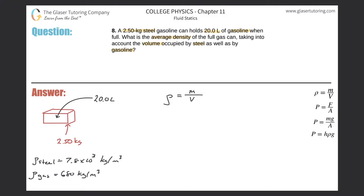If I have an object that has composite parts — meaning more than one part — like the human body, we have a whole bunch of different densities and structures to take into account. So if we were talking about the density of the human body overall, we can say it's the total mass of the body divided by the total volume of the body.